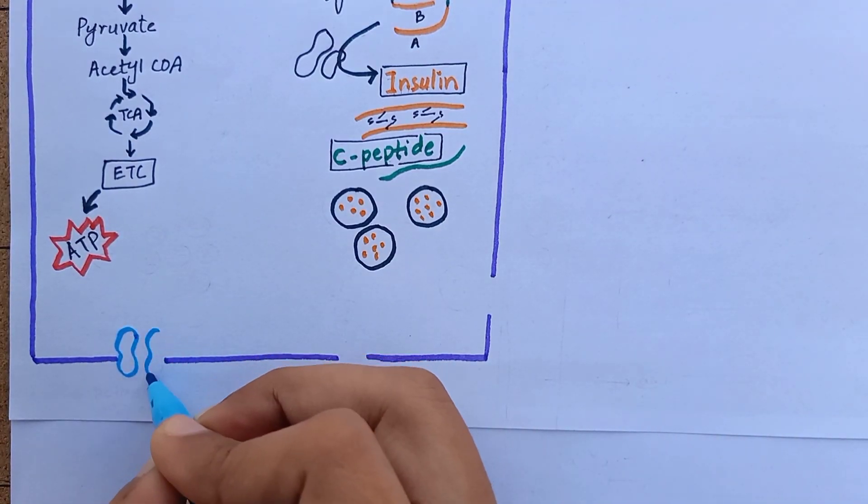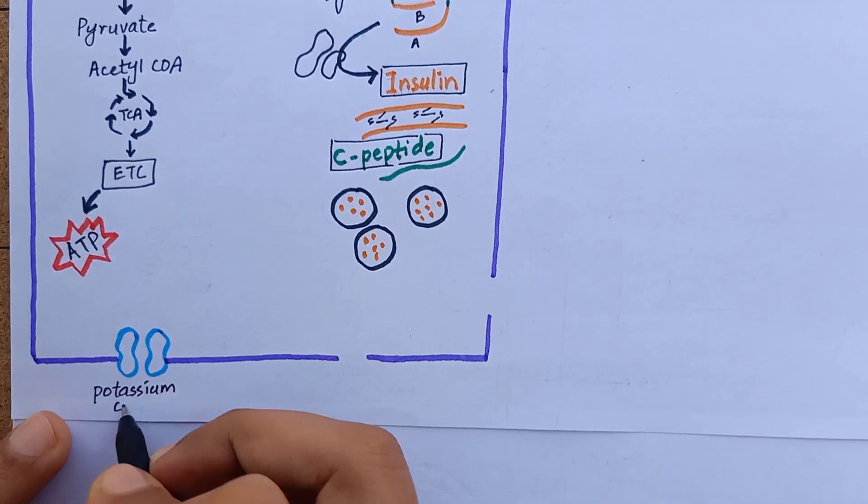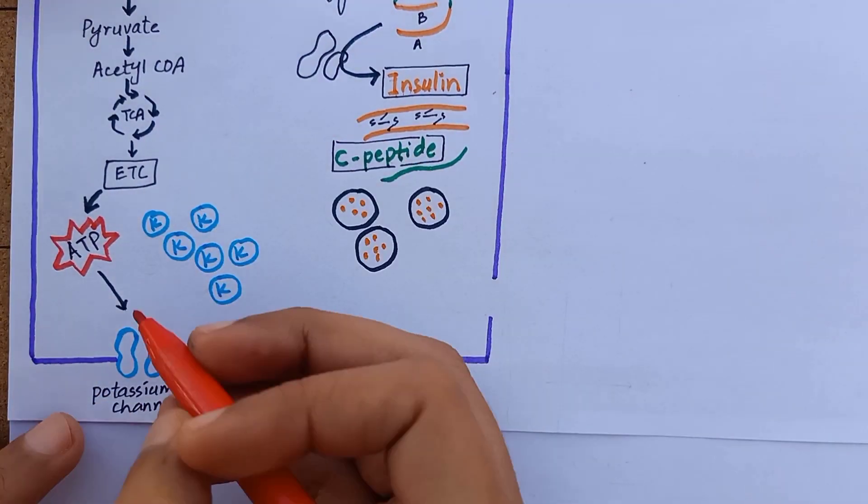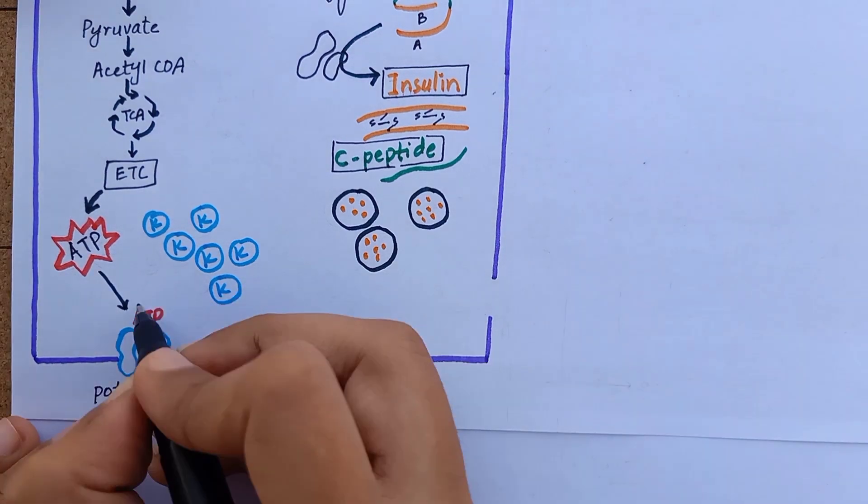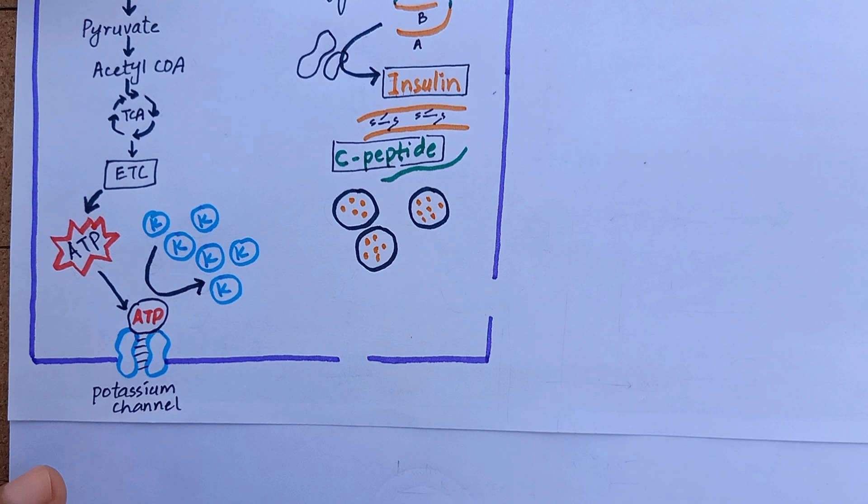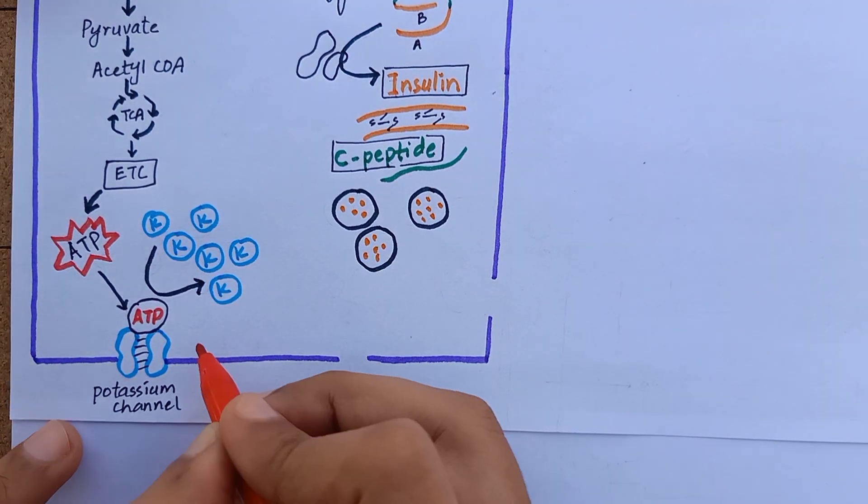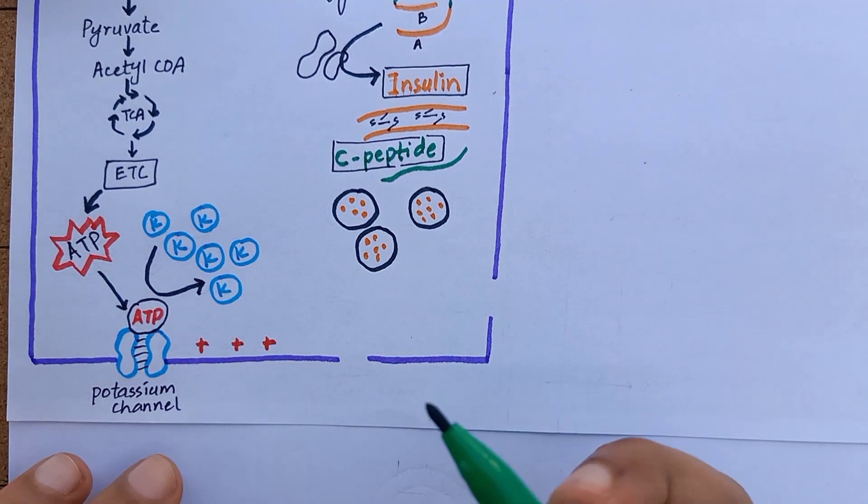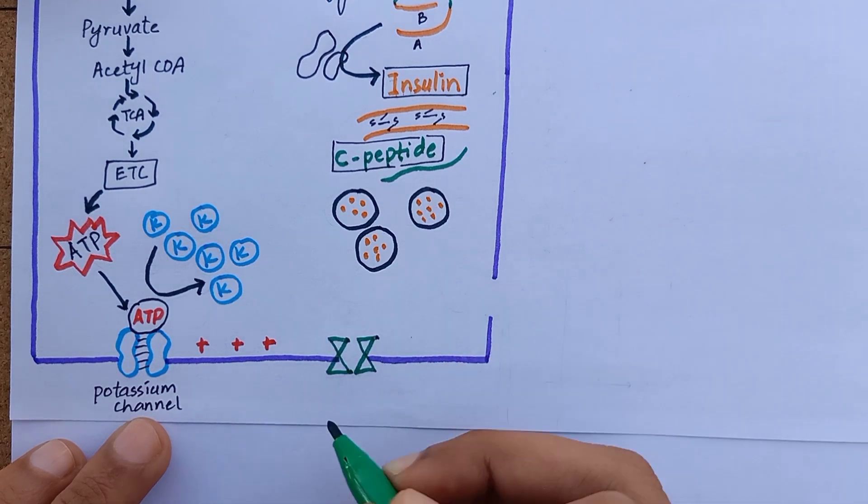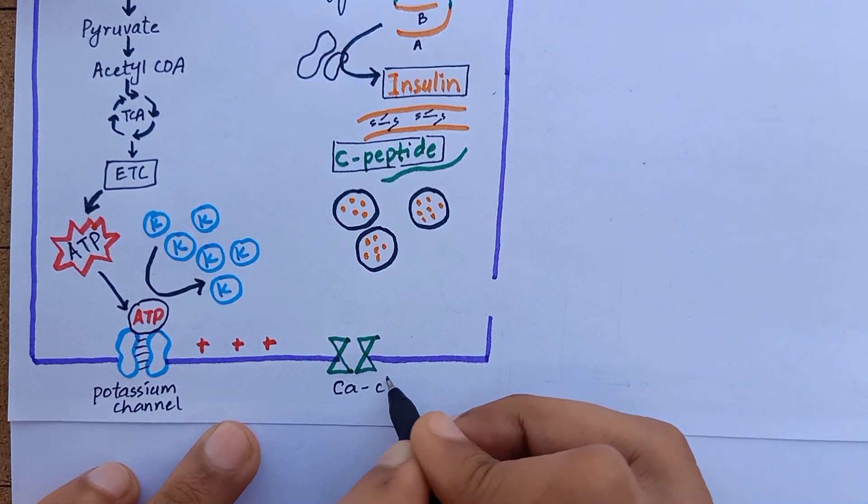On the cell membrane of beta cells, there are ATP-sensitive potassium channels. As ATP binds to these potassium channels, the efflux of potassium is inhibited resulting in accumulation of potassium ion inside the cell. Higher intracellular potassium concentration depolarizes the cell membrane that opens the voltage-gated calcium channels that are sensitive to changes in membrane potential.